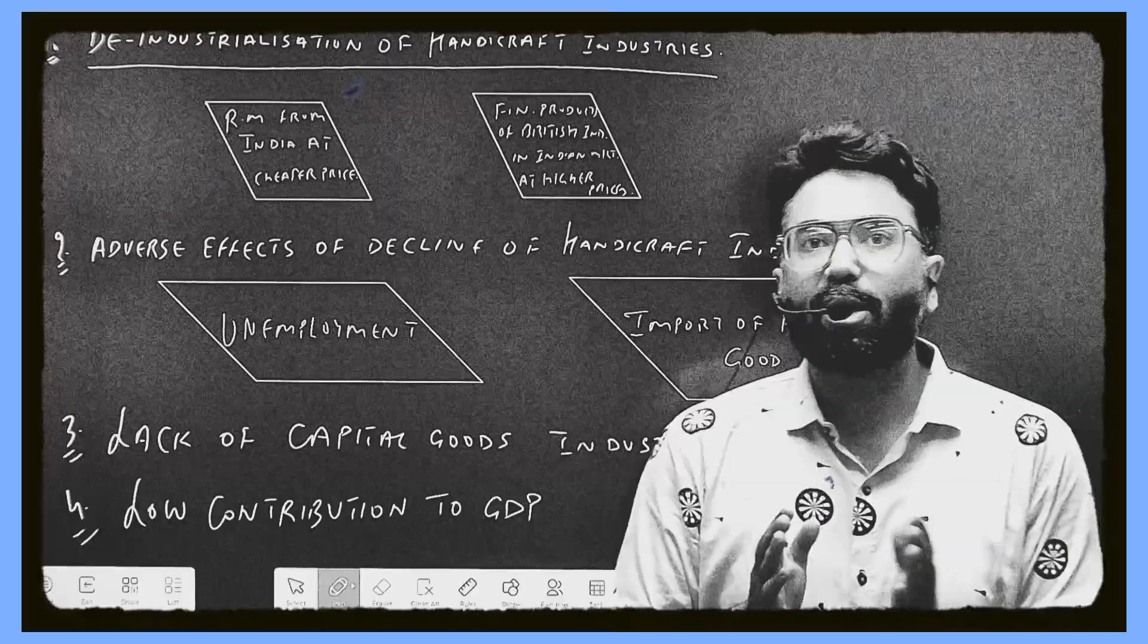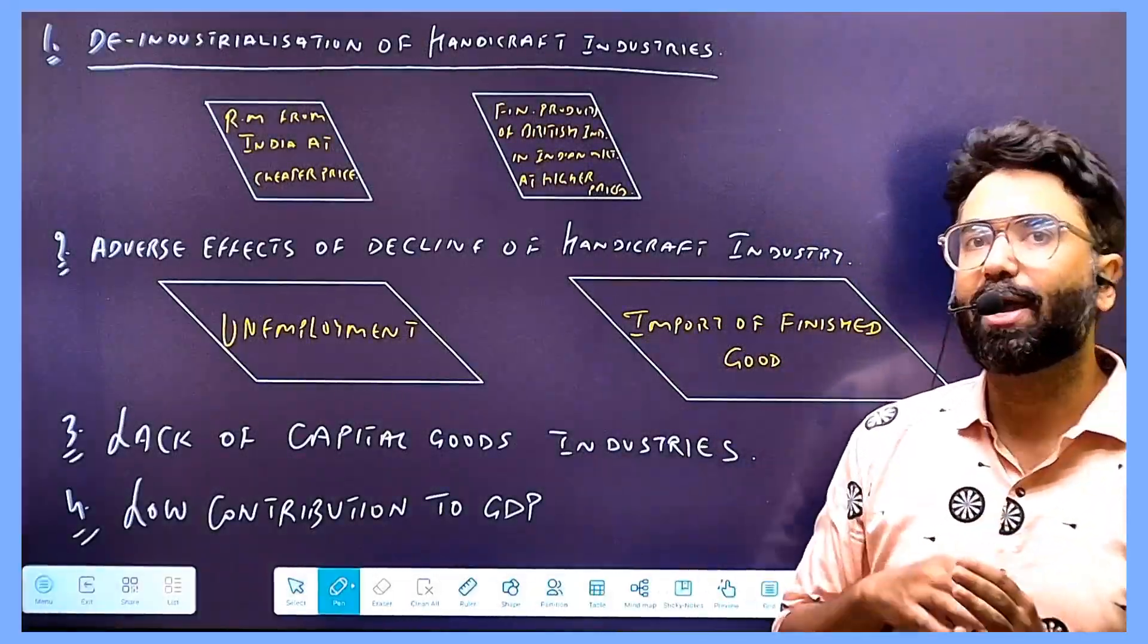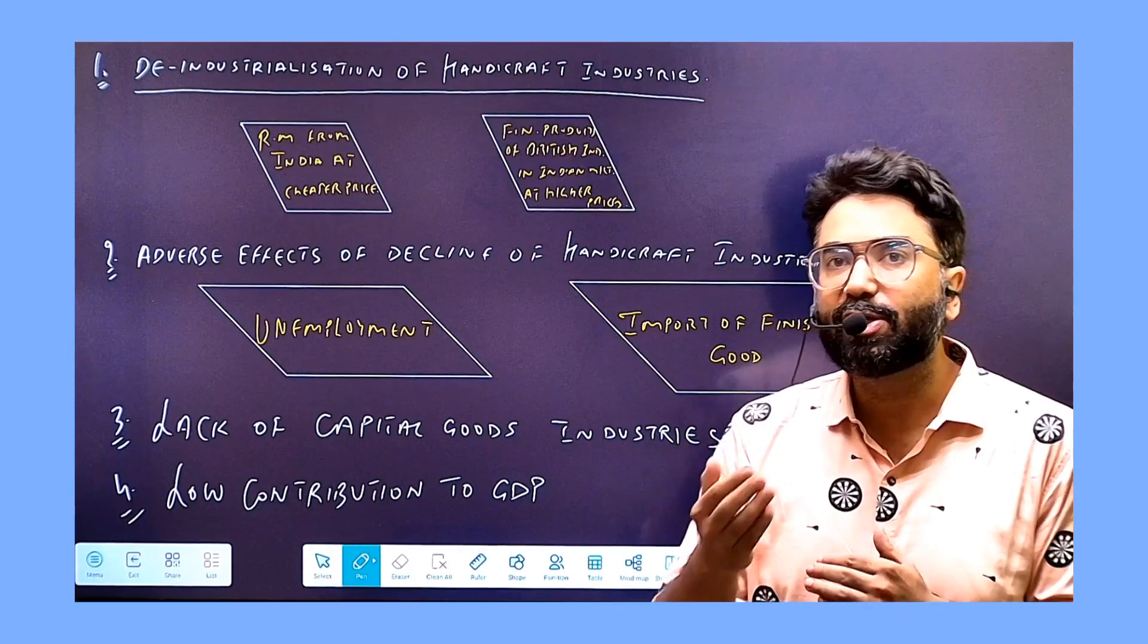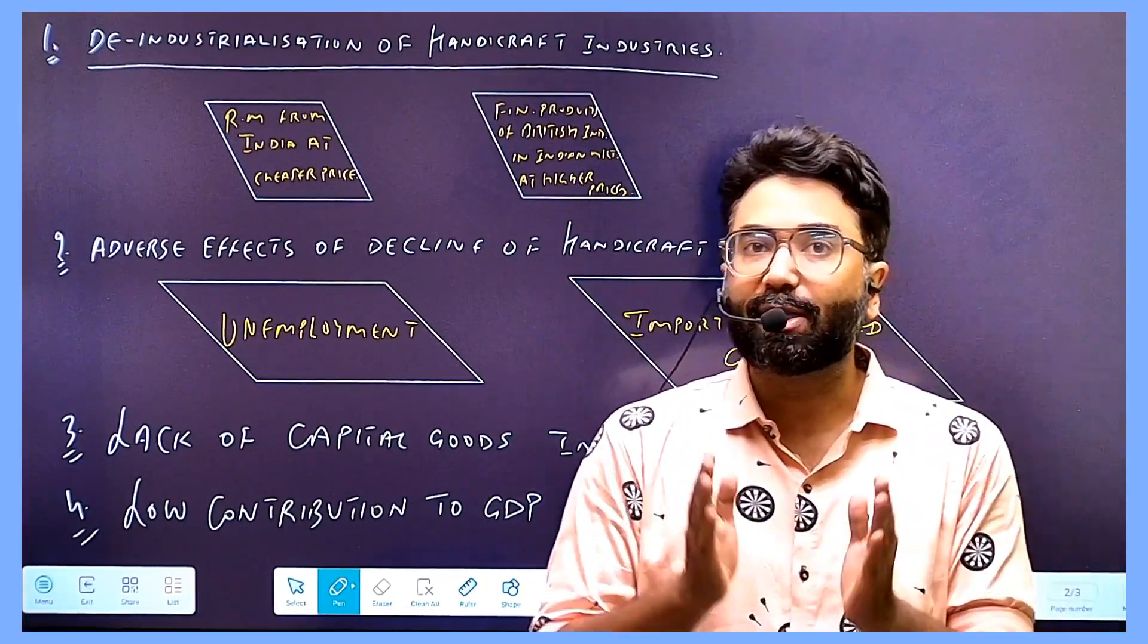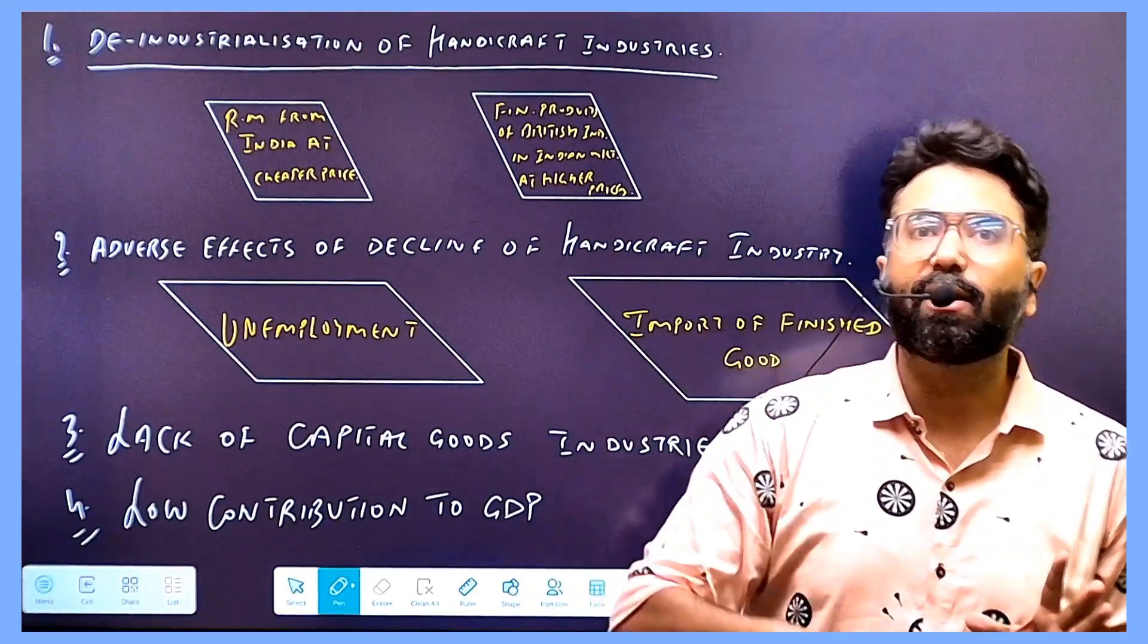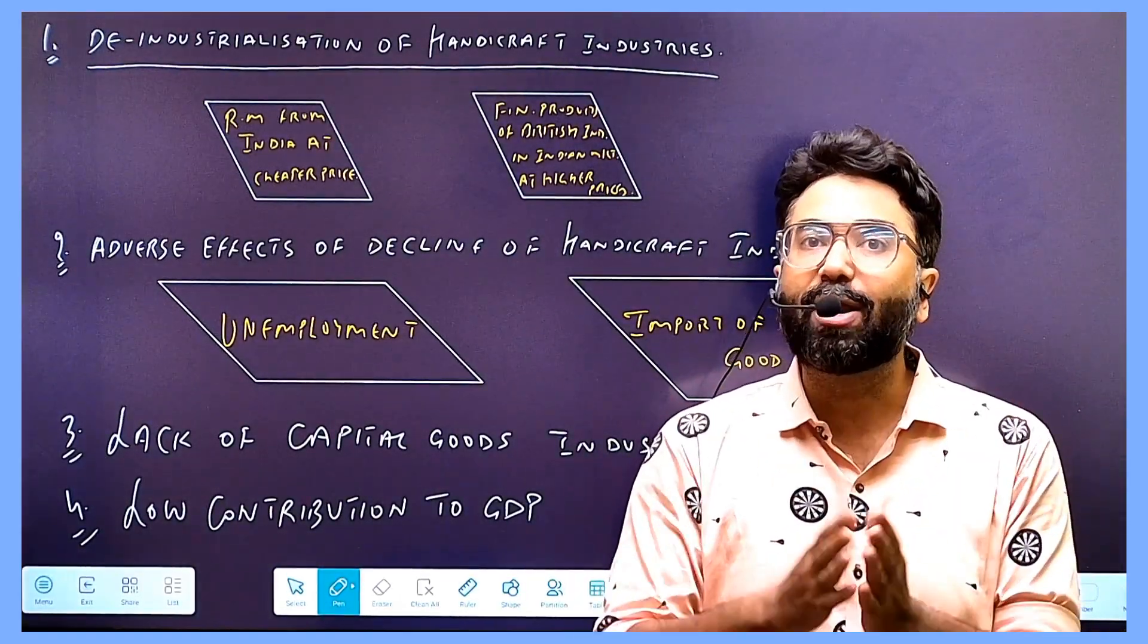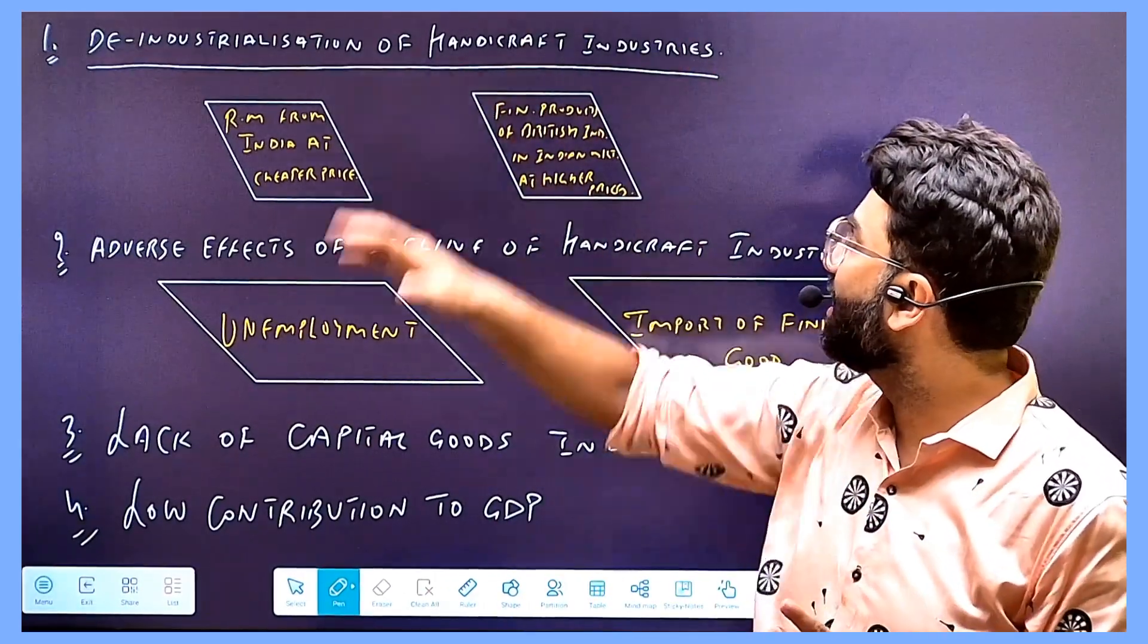The British government used all the benefits for their own country. They used to buy raw materials from India and sell them in Britain, where they were used in factories. They used to build their own finished goods and sell them in the Indian market at high prices. This led to the deindustrialization of handicraft industries.